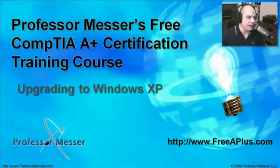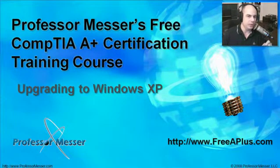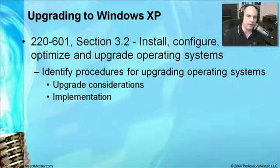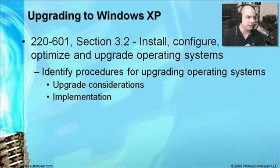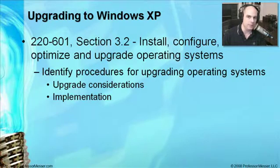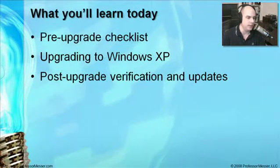Welcome to Professor Messer's free CompTIA A-plus certification training course on upgrading to Windows XP. I'm James Messer, and in this module we're going to talk about what's required to perform an upgrade to the Windows XP operating system. These requirements come from the CompTIA Essentials Exam 220-601, Section 3.2, where we need to install, configure, optimize, and upgrade operating systems. We're going to talk about the considerations needed for the upgrade process, and I'm going to step you through an actual upgrade to Windows XP.